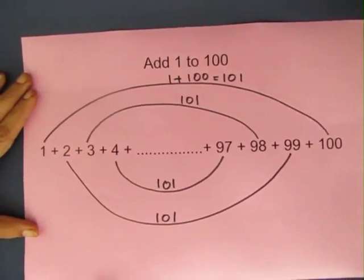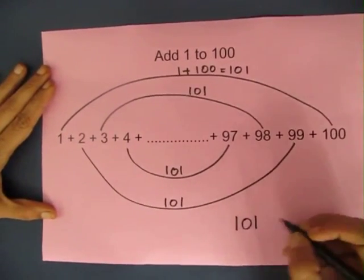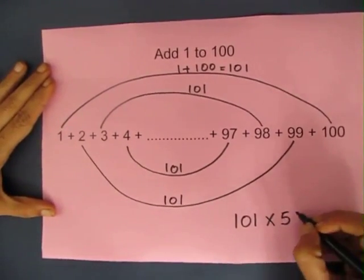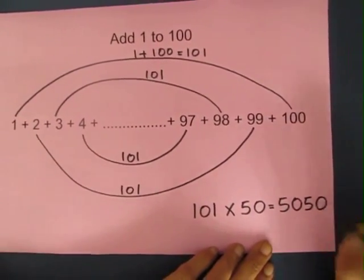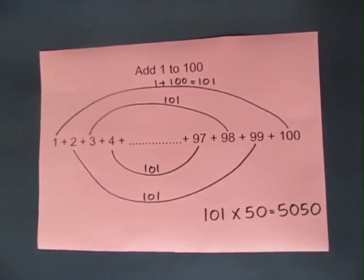And so in a jiffy he wrote the answer. He reckoned that because there are 100 numbers, there would be 50 pairs and each pair would have a value of 101. So 101 into 50 would be 5050.